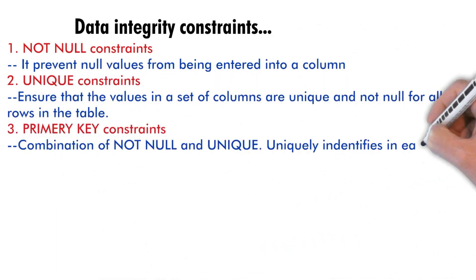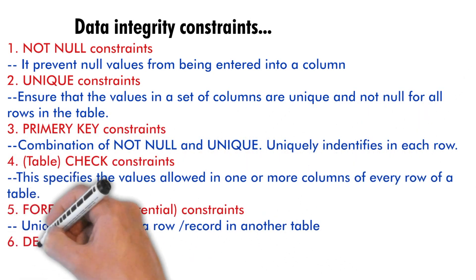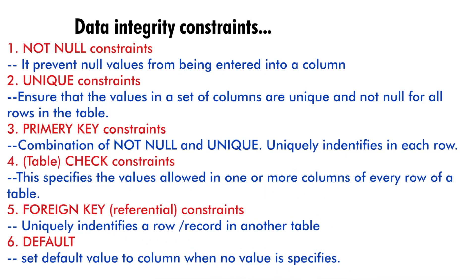While doing database integrity testing, there are constraints to follow. The NOT NULL constraint prevents null values from being entered into a column. The UNIQUE constraint ensures a column's values are unique and not null. The PRIMARY KEY is a combination of NOT NULL and UNIQUE, uniquely identifying each row. The CHECK constraint specifies allowed values for one or more columns. The FOREIGN KEY uniquely identifies a row in another table. DEFAULT sets a default value to a column when no value is specified.